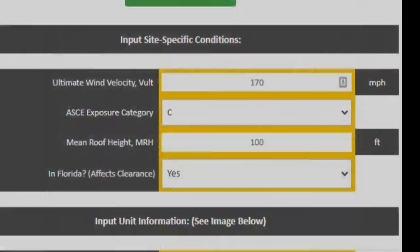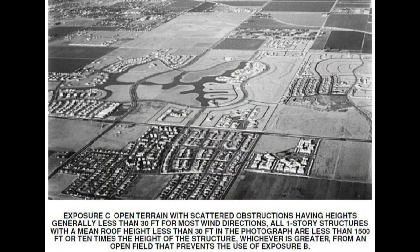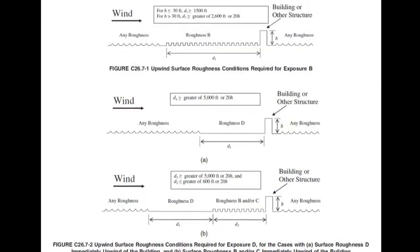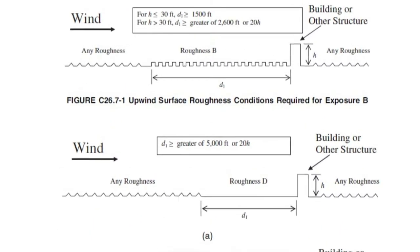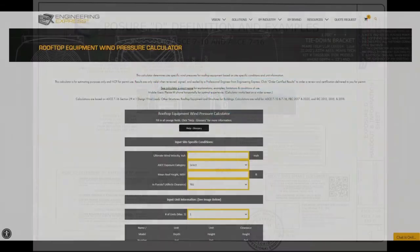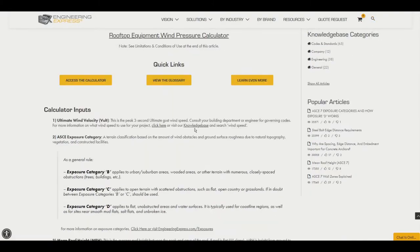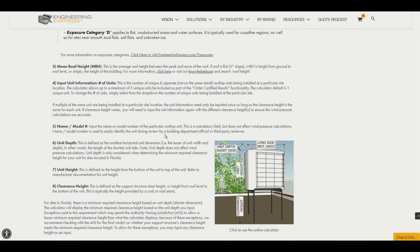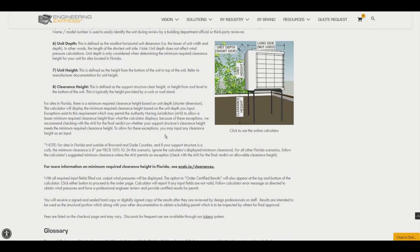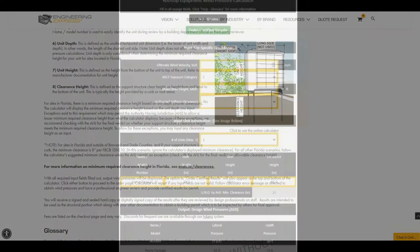Exposure category classifies the surrounding terrain at the installation site. Flatter areas allow wind to ramp up and cause a higher design pressure. Learn about what exposure to use for your design by accessing the calculator's help file and searching the glossary or by contacting your local building department. You'll find examples and how to determine if you're in the higher coastal exposure D zone.